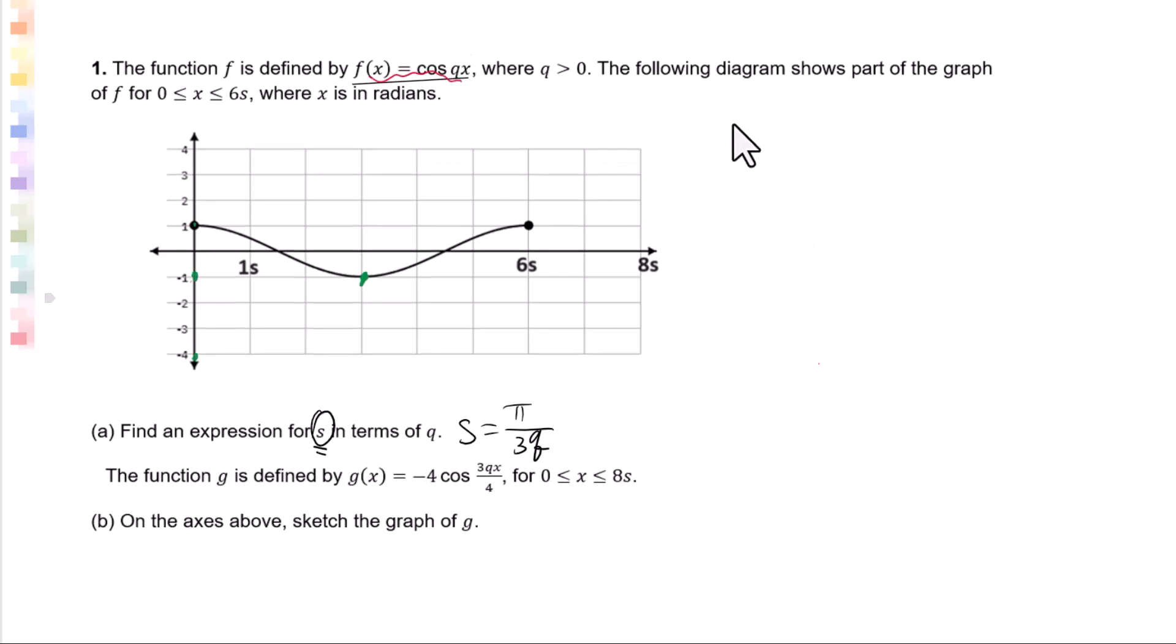First of all, we need to compare f(x) and g(x). f(x) = cos(3qx/4). Transformation from f(x) to g(x) has three steps.